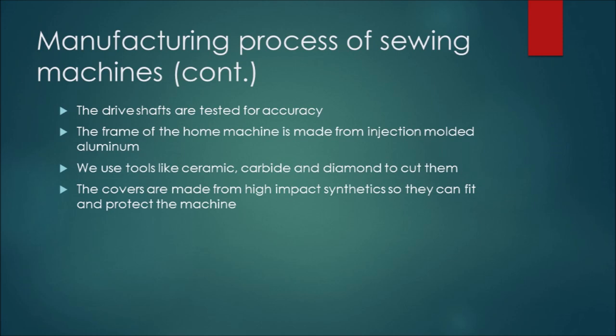Robots are used in the manufacturing process as they move the frames from operation one to operation two. Finally, home machines are packed by power control unit.